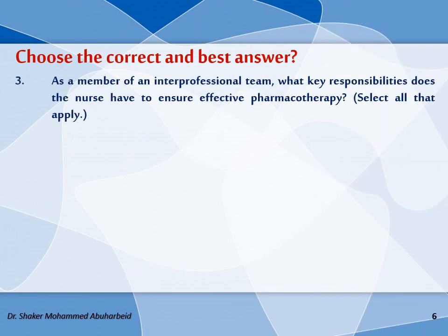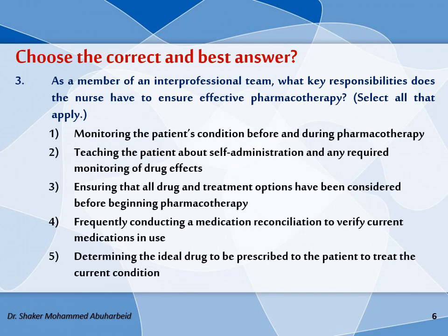The third question: as a member of the interprofessional team, what responsibilities does the nurse have to ensure effective pharmacotherapy? Select all that apply. Option 1: monitoring the patient's condition before and during pharmacotherapy. Option 2: teaching the patient about self-administration and any required monitoring of drug effects. Option 3: ensuring that all drug and treatment options have been considered before beginning pharmacotherapy. Option 4: frequently conducting medication reconciliation to verify current medications the patient is using. Option 5: determining the ideal drug to be prescribed to treat the current condition.